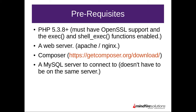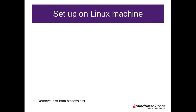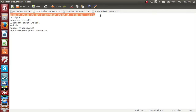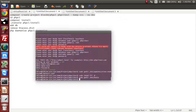Let's set up PHP CI on a local machine. The prerequisites are: minimum PHP version 5.3.8 or higher on the server, OpenSSL support, system functions like exec and shell_exec, a web server such as Apache, Composer installed on your server, and a MySQL server. The best practice is to use Composer and install PHP CI in the project folder.